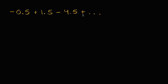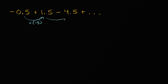So we've got this infinite series here. It looks like a geometric series. When you go from the first term to the second term, we are multiplying by negative three. And then to go to the next term, we're going to multiply by negative three again. So it looks like we have a common ratio of negative three.